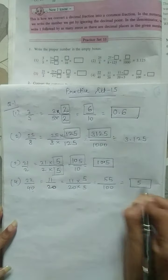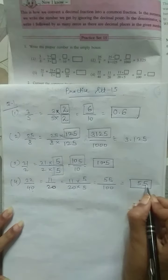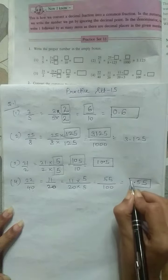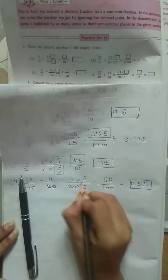Our final answer: we will write the numerator first. Count the number of zeros: 2. So 1, 2 and decimal. This is how we will get our answer.